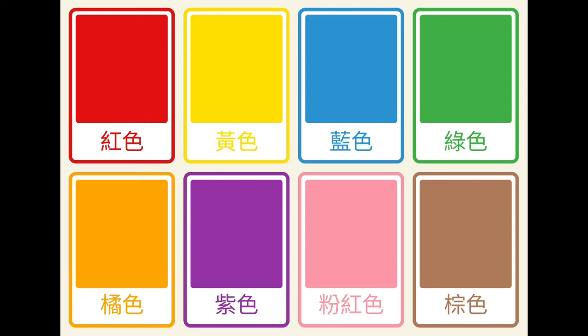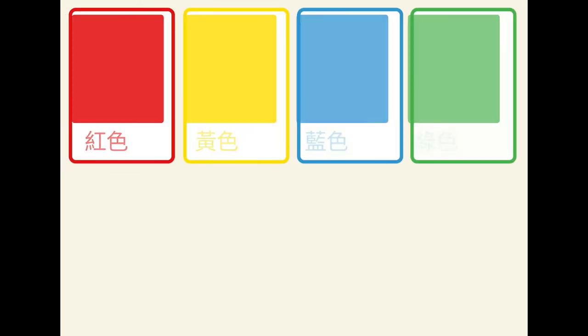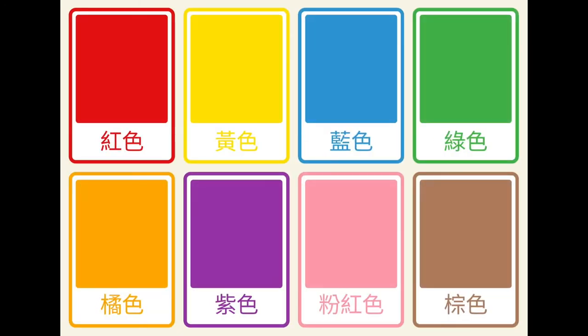紫色, 粉红色, 棕色. Okay, so now repeat after me. 红色, 黄色, 蓝色, 绿色, 橘色, 紫色, 粉红色, 棕色.